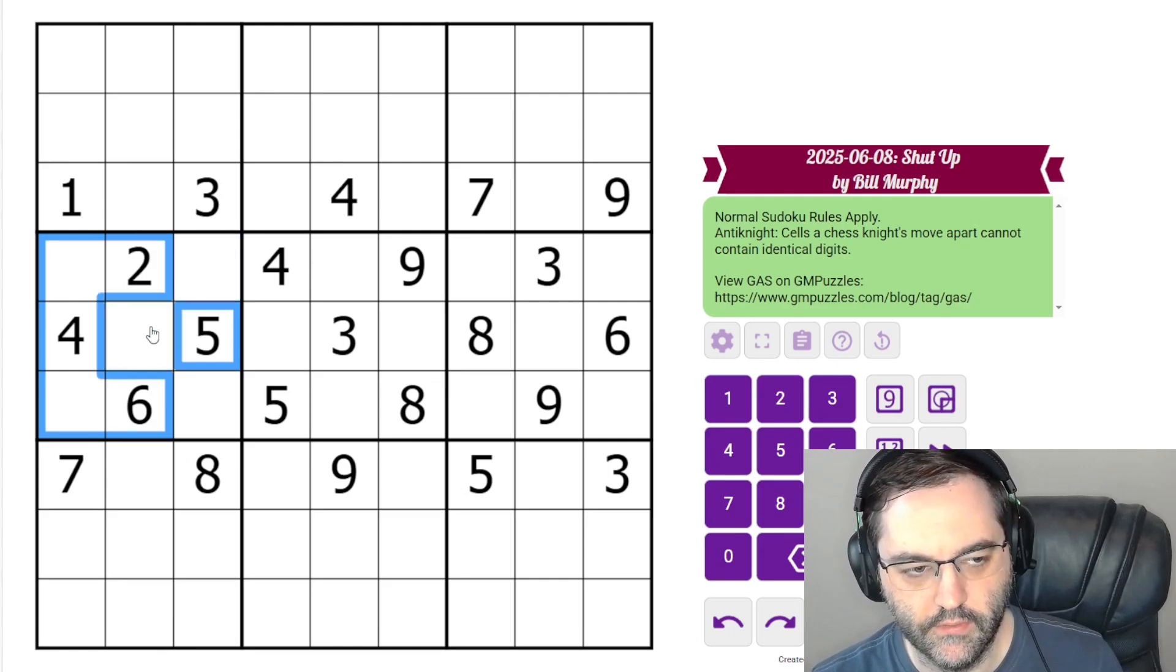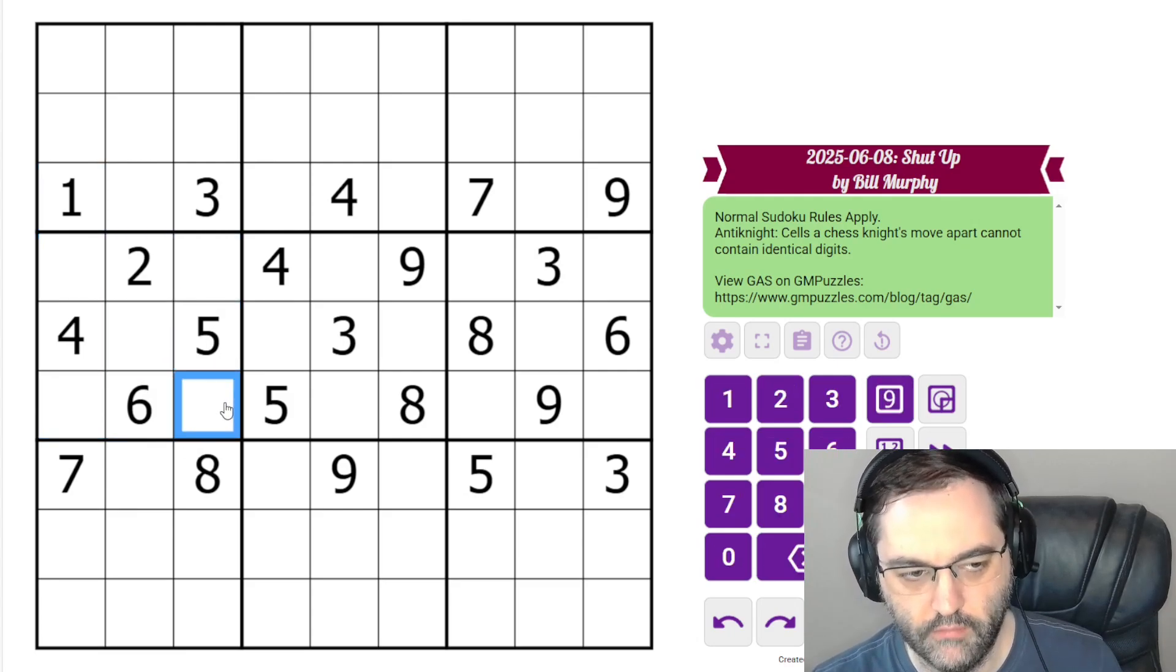Let's think about where one can go in this box. There are already four given digits, none of them are one. This one also sees these cells in column, so these are all ruled out. But now these two cells see one by anti-knight. They're a knight's move away, so they can't contain it. This is a one, it's the only place in the box.